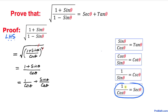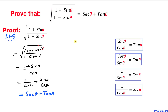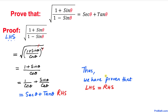From the table of trigonometric identities, we know that 1/cos θ equals secant theta, and sin θ/cos θ equals tangent theta. So this becomes secant theta plus tangent theta, which is exactly our right hand side. Thus we have proven that the left hand side is indeed equal to the right hand side. Thanks for watching, and please don't forget to subscribe to my channel for more exciting videos. Bye!